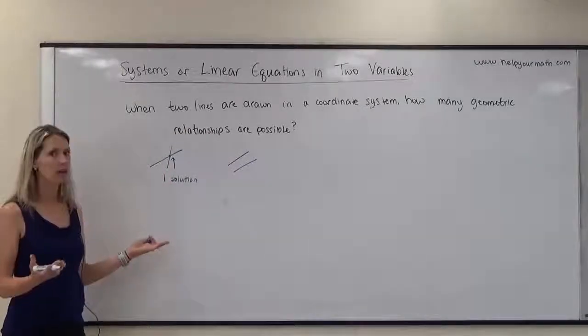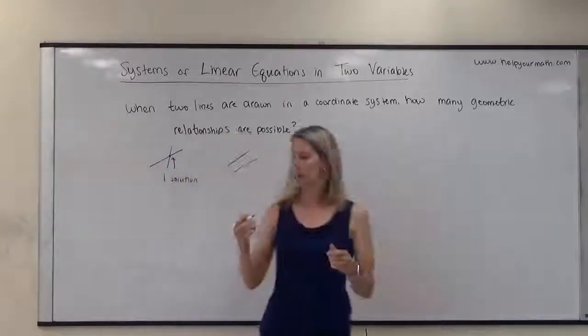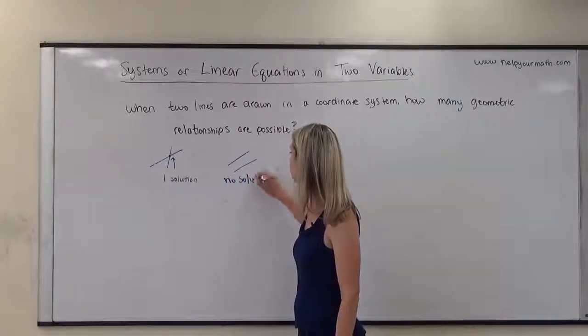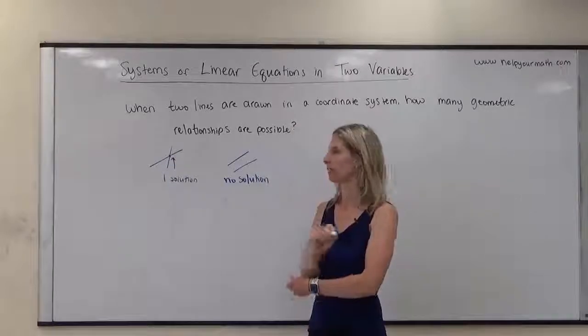So if we have parallel lines, that means we would have no solution because they would never intersect. That would be a contradiction to the definition of Euclidean parallel lines.